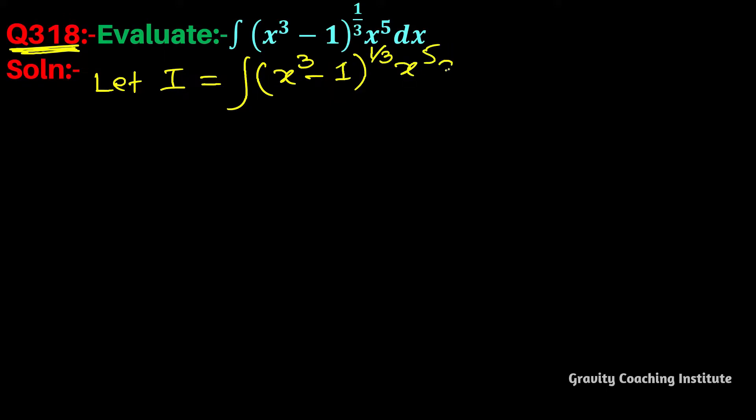We can rewrite this as ∫(x³-1)^(1/3) * x² * x³ dx. If we differentiate, we get 3x² dx.